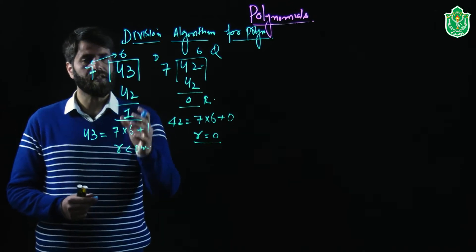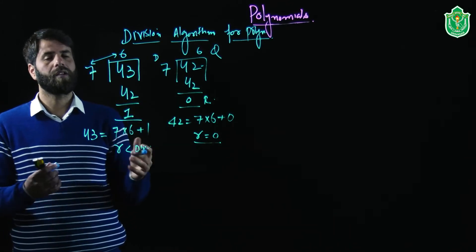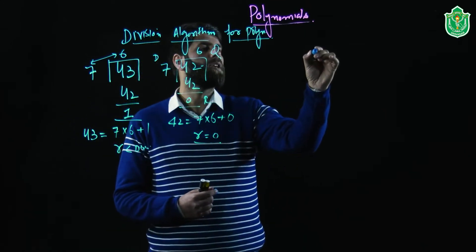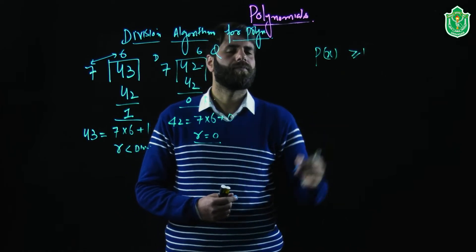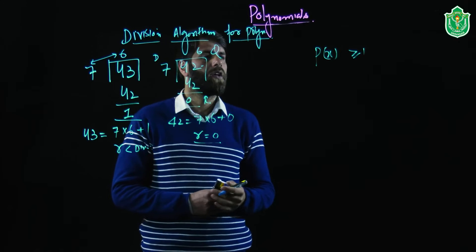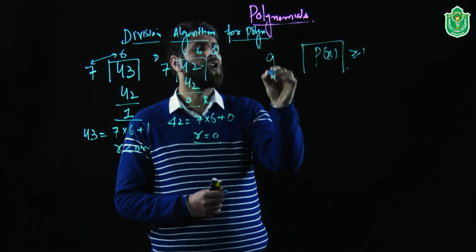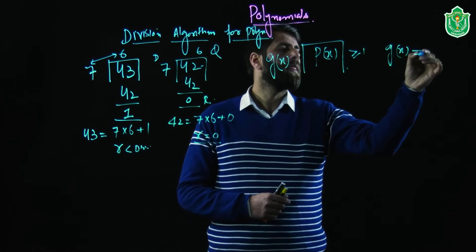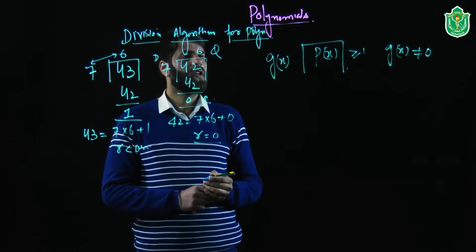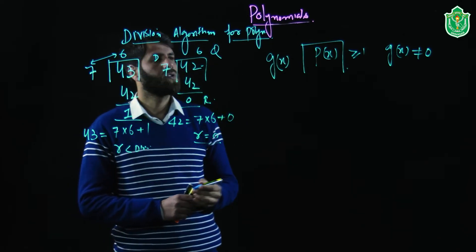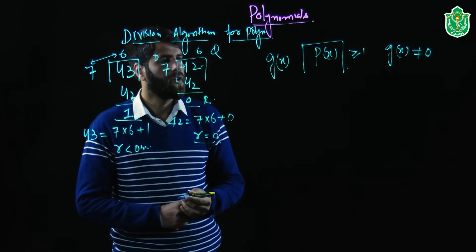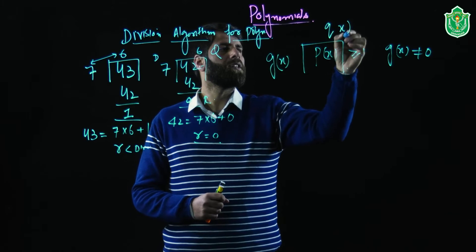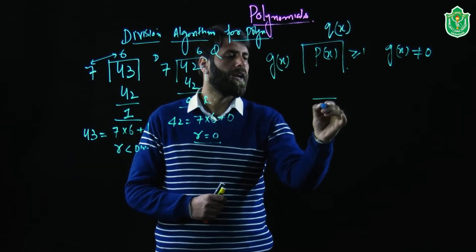We will generalize this concept in terms of polynomials — that is why it is called the division algorithm for polynomials. If you have a polynomial p of x of degree greater than or equal to 1, and you divide this by another polynomial g of x where g of x is not equal to 0, you will get two things: a quotient q of x and a remainder r of x.